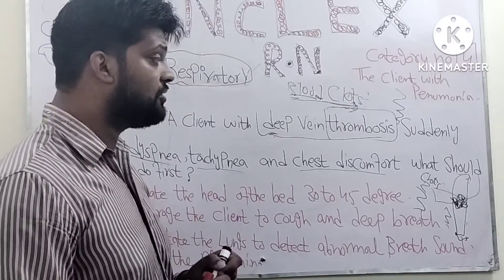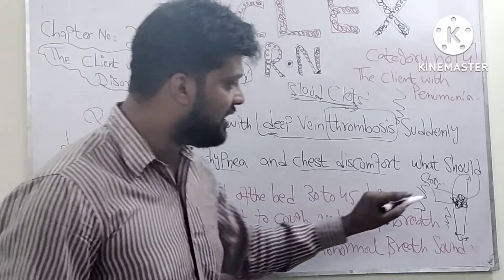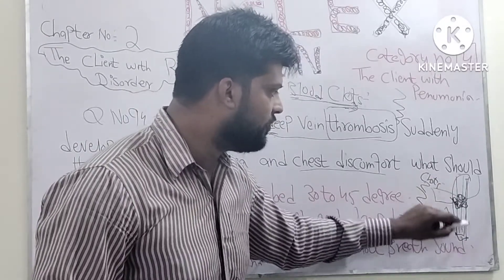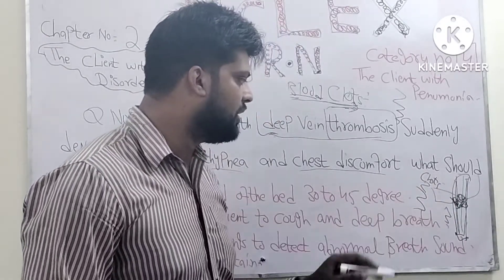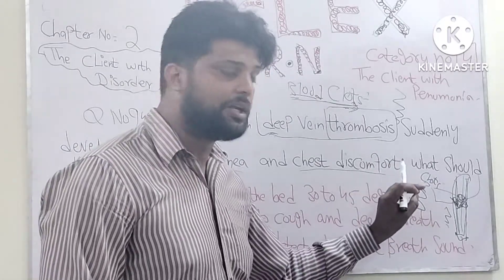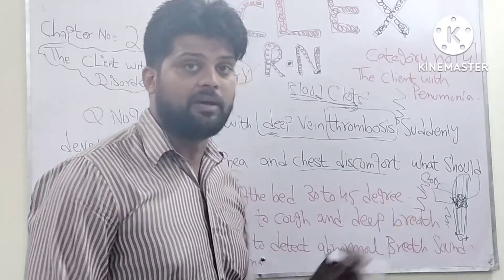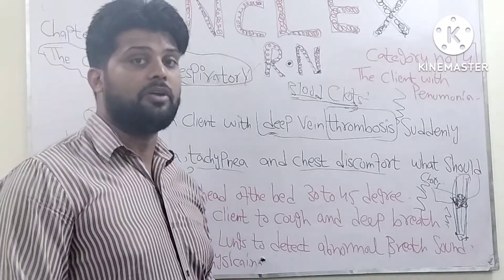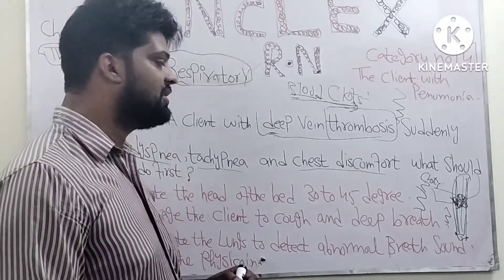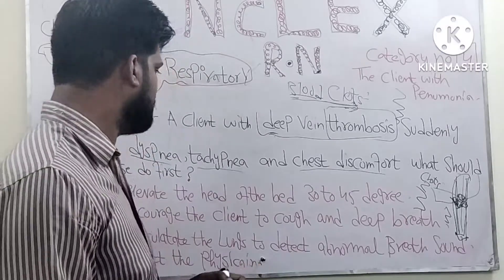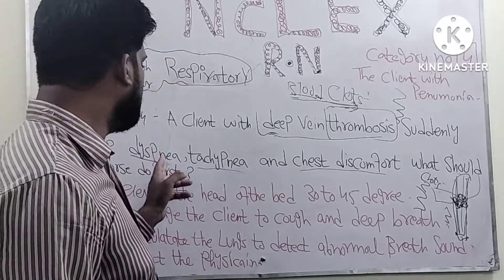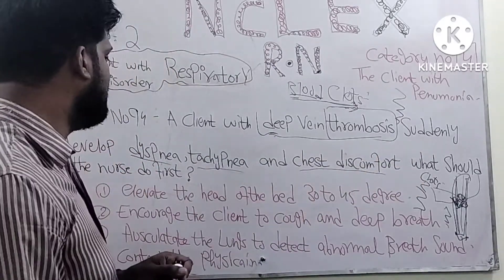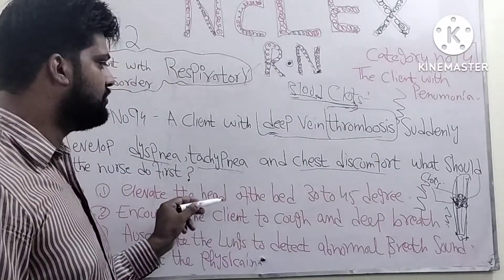There are also layers of veins and arteries: tunica adventitia, tunica media, and tunica intima. I discussed this before in my previous videos — if you want to watch it, go to my previous videos. Now, dyspnea, tachypnea, and chest discomfort — what should the nurse do? These are the four options and we have to choose one.